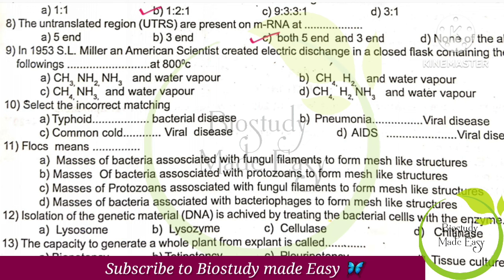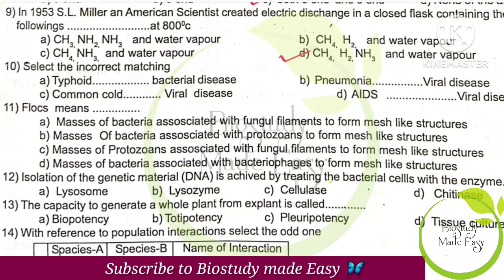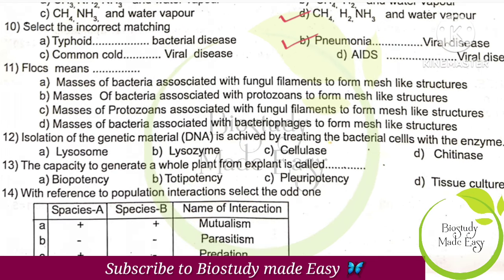In 1953, Miller's experiment used a conical flask setup. Looking at the diagram, the correct answer has methane, hydrogen gas, ammonia, and water vapor. Select the incorrect matching — option B, pneumonia — because it is caused by the bacteria Streptococcus pneumoniae, not a virus. Floc means mass of bacteria with fungal filaments — that is option A.